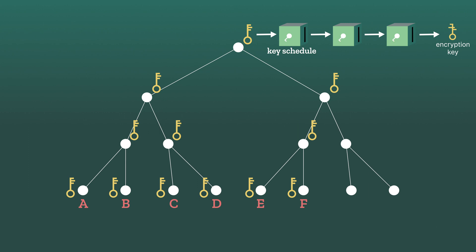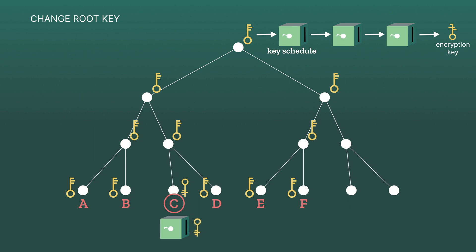But sometimes it's necessary to change the root key. This could happen if, for example, Carol is worried that someone has access to her private key or another private key on the path up to the root. In this case, it's not sufficient to change the keys down the line — Carol needs to change the root key itself. First, Carol creates a new private key for herself. Next, she applies the key derivation function to derive a new private key for the node above her, then applies it again to get a new private key for the node above that, and so on — applying the ratcheting function from the leaf all the way up to the root. For this reason, the tree is called a ratchet tree. In the end, we have a new root key, which can be used to derive new secure keys to send messages.